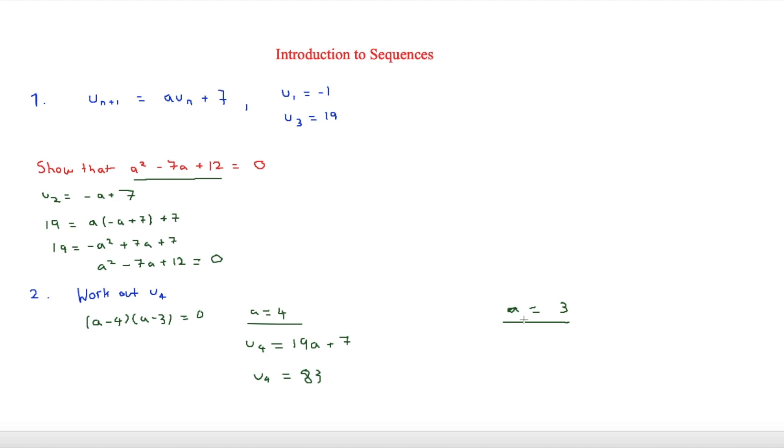Now for a is equal to 3. Then we're going to have the same thing. We still got that u4 is equal to 19a plus 7. But this time a is equal to 3. So that means that u4 is going to be equal to 64 instead.